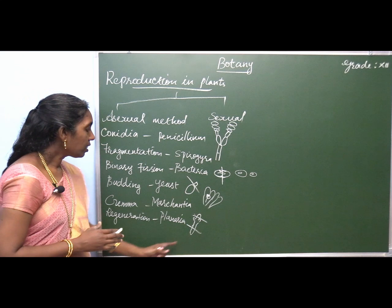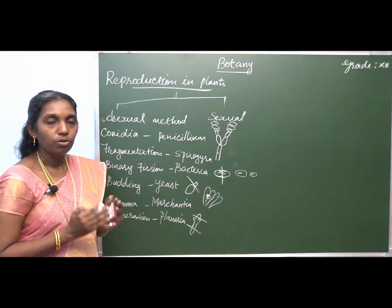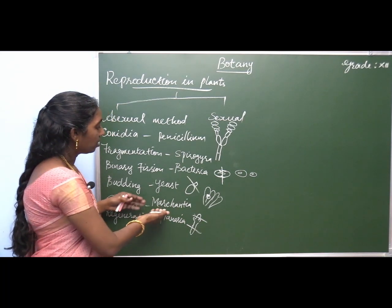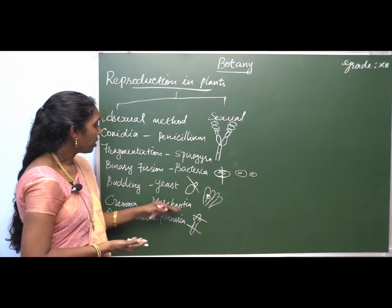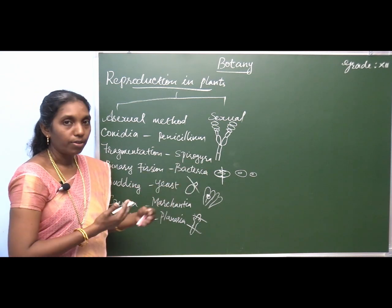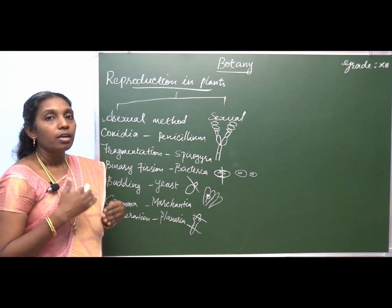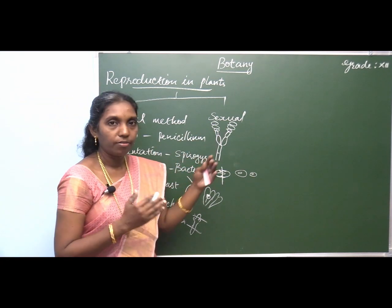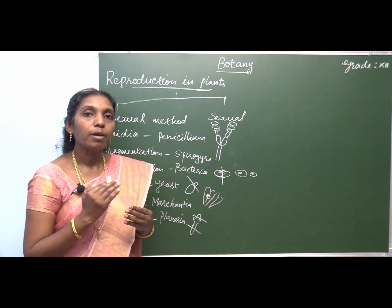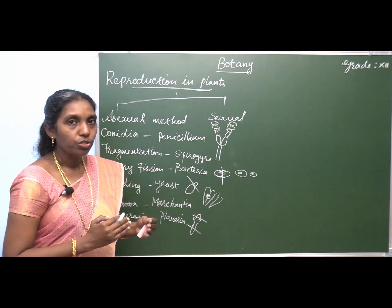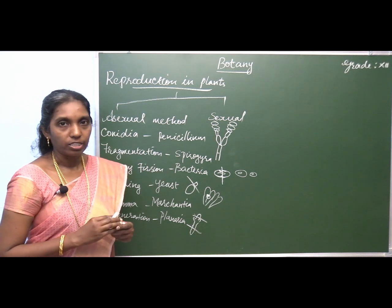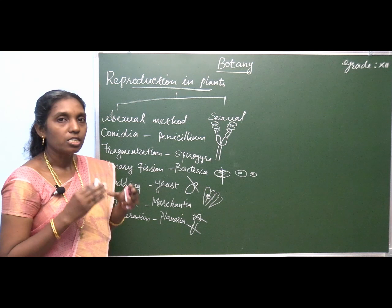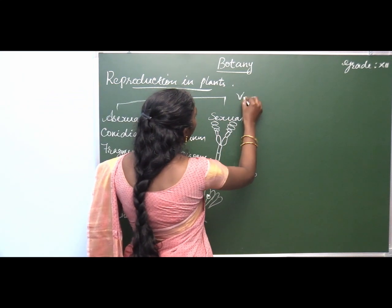All these methods are observed in lower forms of organisms — fungi, bacteria, planaria, bryophytes, and algae. Naturally, higher forms of organisms show the sexual method of reproduction. But certain higher plants also show the asexual method of reproduction. In plants, the asexual method of reproduction is called the vegetative method of reproduction.